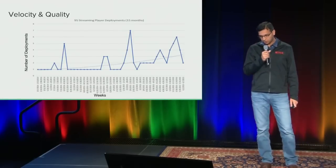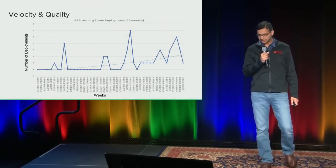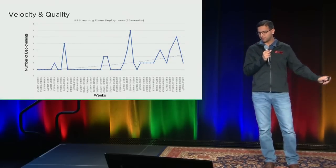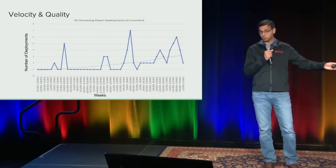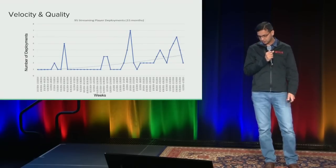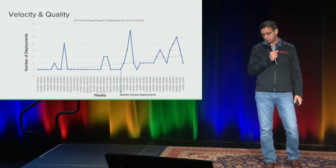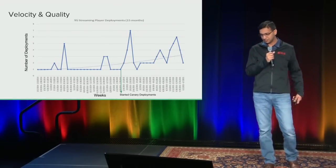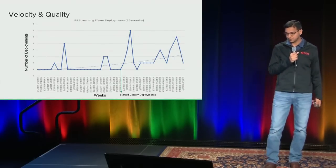How did we do with velocity and quality? This chart shows our deployment frequency over the past 15 months until June of this year. More than 60% of our deployments happened after we started the whole canary process, which gave us a lot of confidence to deploy more frequently. In terms of quality, there were five issues we actually detected in production where we could trigger a rollback or roll forward depending upon the scope of the bug.